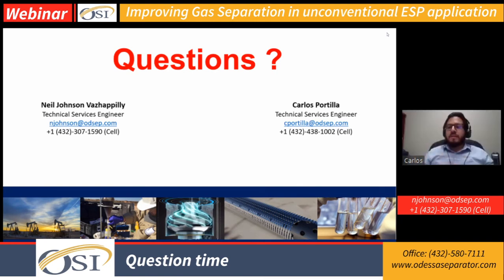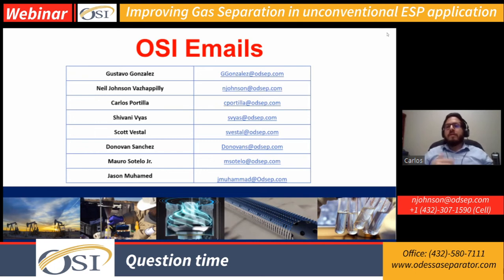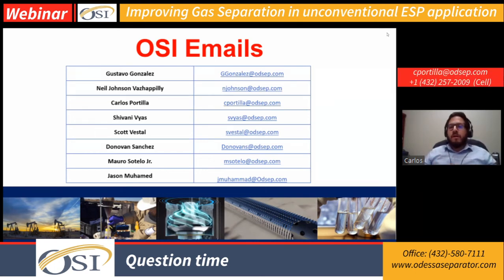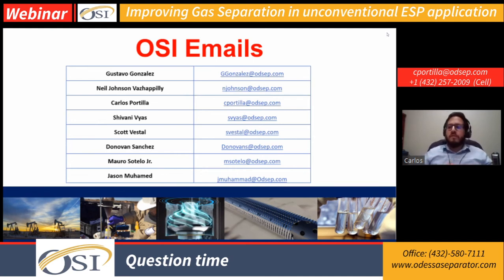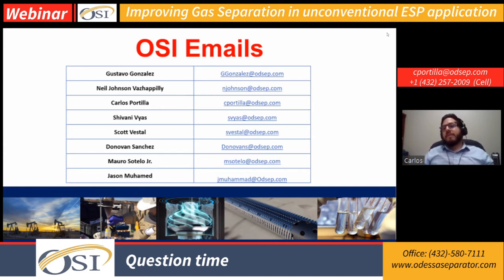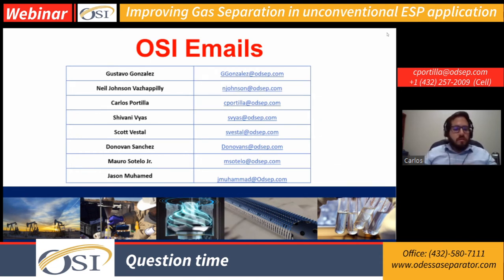We have different case studies and papers we have presented with different cases on this application. We're going to leave specifications in the comments below where you can find ESP papers and petroleum papers related to this application. We have about 88 configurations in the Permian Basin, and we have information we can share with you if you need it.